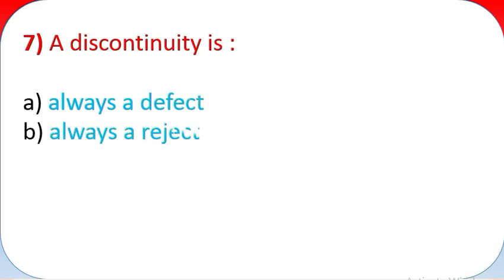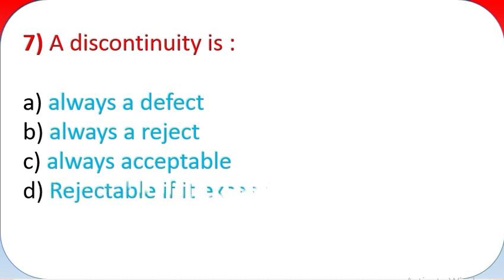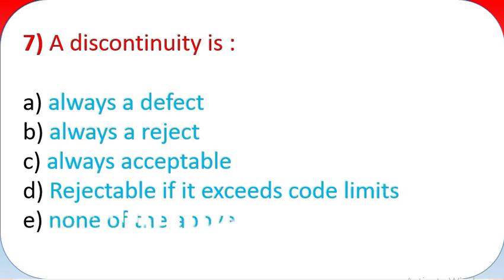Question 7: A discontinuity is. A: Always a defect. B: Always a reject. C: Always acceptable. D: Rejectable if it exceeds code limits. E: None of the above.